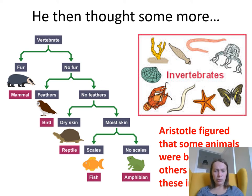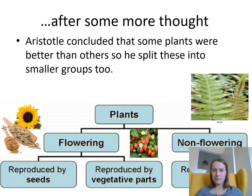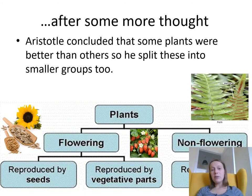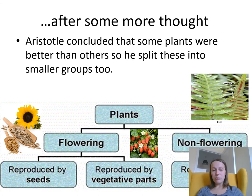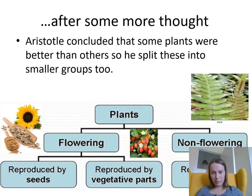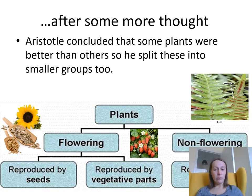This might be a really good one to pause and have a look at. After some more thought, Aristotle concluded that some plants are better than others, so he split these into smaller groups too — looking at plants that have a flower and plants that don't flower, ones that are reproduced by seeds, and ones that are reproduced by vegetative parts. These non-flowering plants reproduce with bulbs by splitting apart in the ground, or with spores.